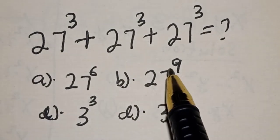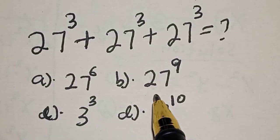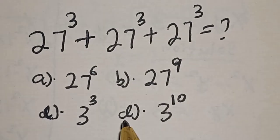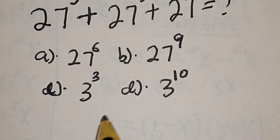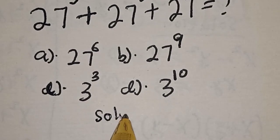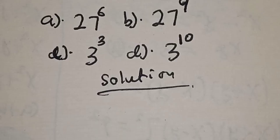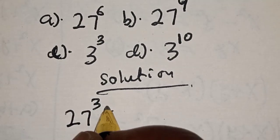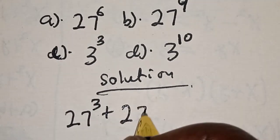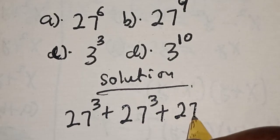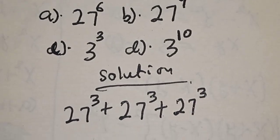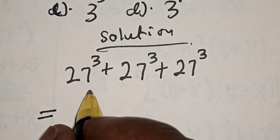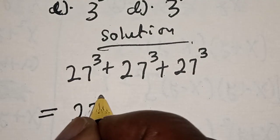But before we proceed, please don't forget to like, share, comment, and subscribe. Now let's start the solution. We have the given question: 27 raised to power 3 plus 27 raised to power 3 plus 27 raised to power 3. We can see that 27 raised to power 3 is common, so let's bring it out.